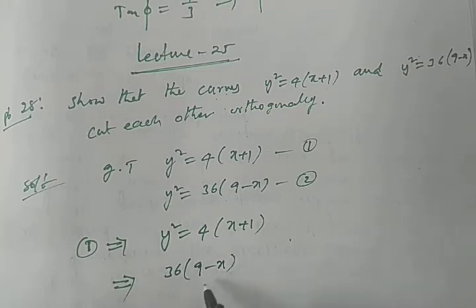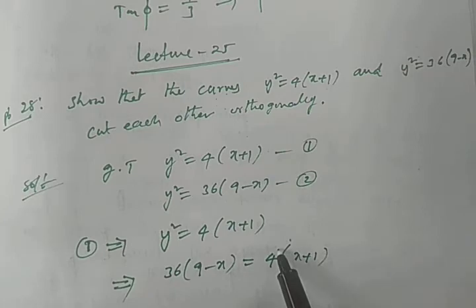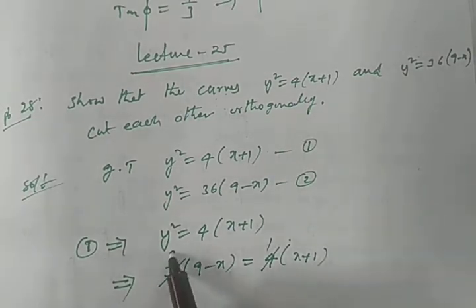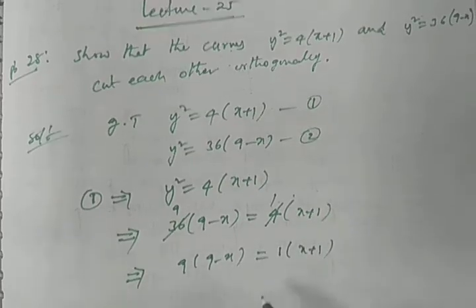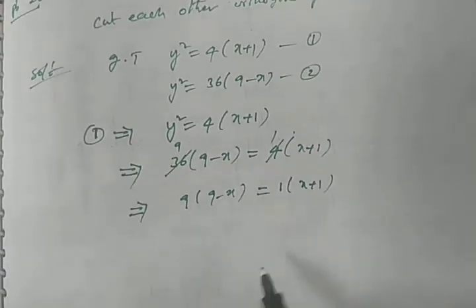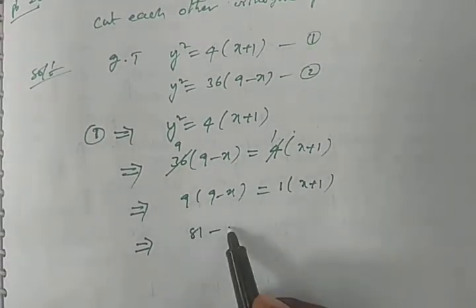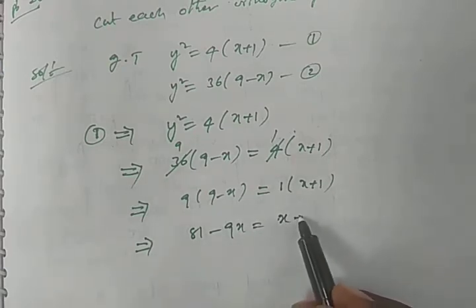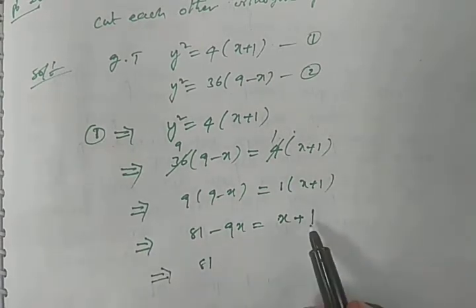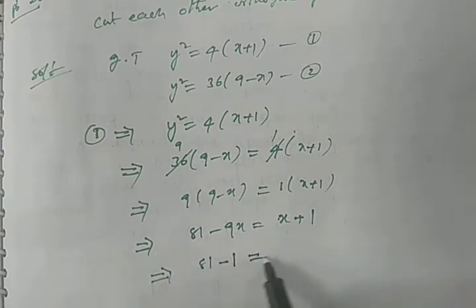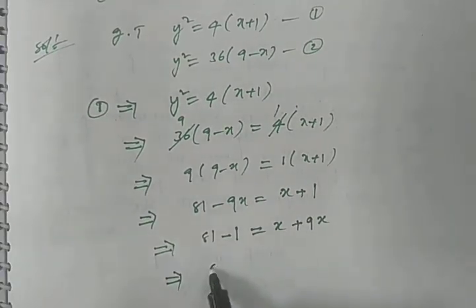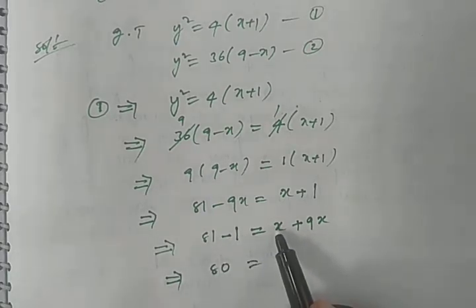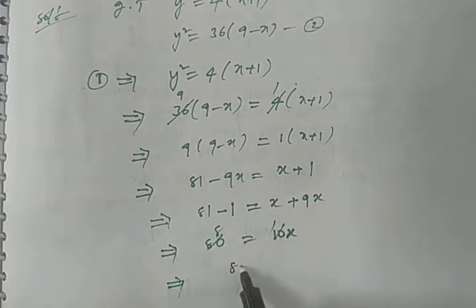36(9−x) = 4(x+1). Dividing both sides by 4, we get 9(9−x) = 1·(x+1). So 81 − 9x = x + 1. Sending +1 to the left gives 81 − 1 = 80, and sending −9x to the right gives x + 9x = 10x. So 80 = 10x, which gives x = 8.